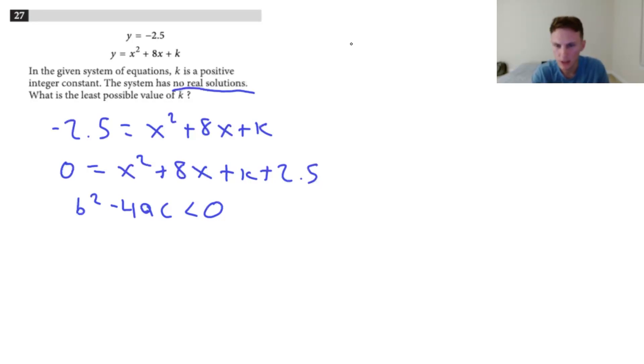So basically in this case, I'm going to write it up here, a is going to equal 1 from the x squared, b is going to equal 8 from the number in front of the x, and c is going to equal k plus 2.5. These two constants at the end getting added together. So now if I plug this all in, this will be 8 squared minus 4 times 1 times k plus 2.5 is less than zero.